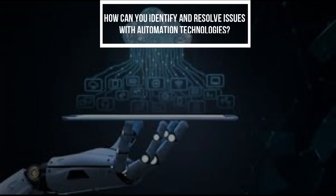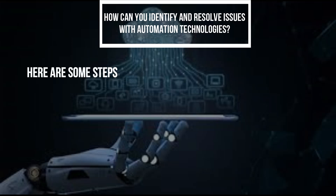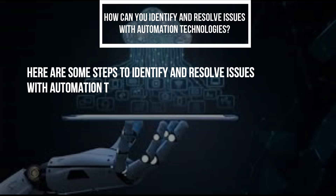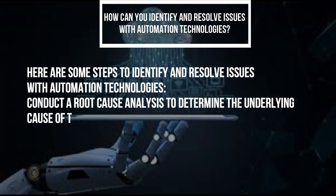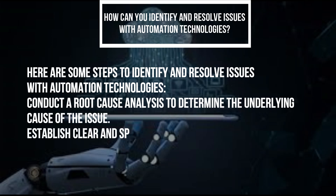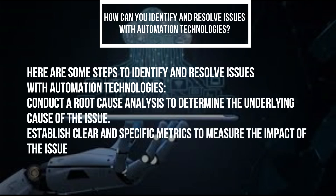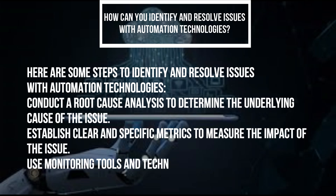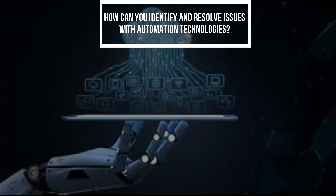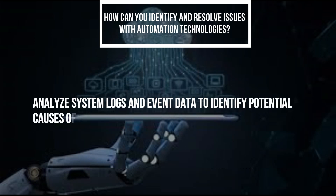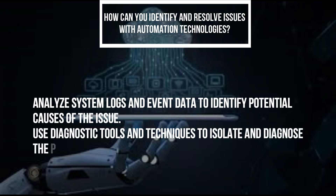How can you identify and resolve issues with automation technologies? Here are some steps: conduct a root cause analysis to determine the underlying cause of the issue, establish clear and specific metrics to measure the impact of the issue, use monitoring tools and techniques to gather data on system performance, and analyze system logs and event data to identify potential causes. Use diagnostic tools and techniques to isolate and diagnose the problem.